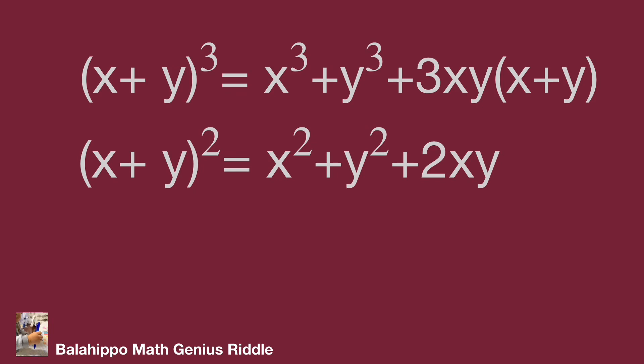And quantity x plus y squared equals x squared plus y squared plus 2xy. In these two equations, we have two unknowns: x plus y and xy. We let x plus y equal to a.